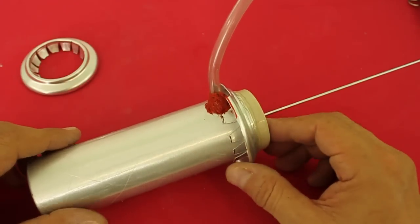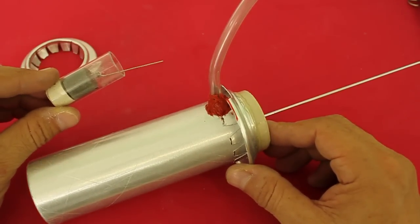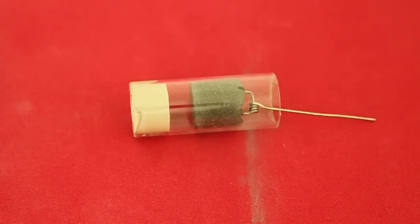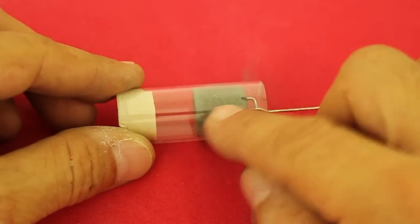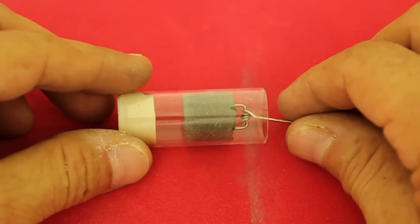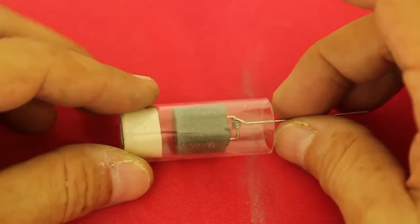The other end of the hose goes to the power cylinder. The cylinder is made out of a glass test tube and the piston is made of epoxy.